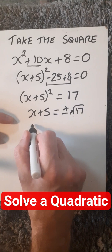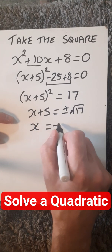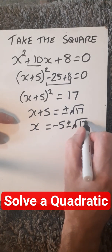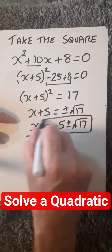Now, to get the x on its own, just subtract 5. So, x equals minus 5 plus or minus, square root of 17, and we are done.